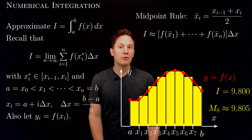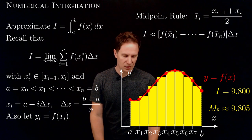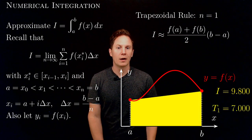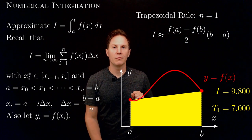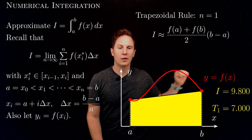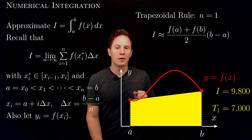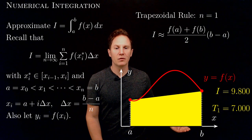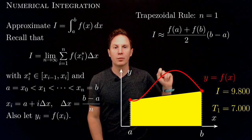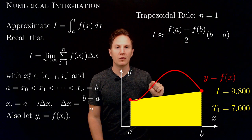But it's not only rectangles that we can use to approximate the area under the curve. Another commonly used approximation uses trapezoids — this is called the trapezoidal rule. I'll illustrate it first for the case of one trapezoid. We get these trapezoids by connecting the points on the graph of the function, and the area of one trapezoid is the base times the average height. That's what this formula expresses: we take the average of the endpoint values, f of a plus f of b over 2, times the base b minus a.